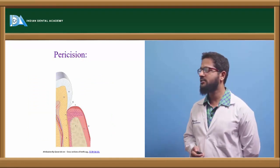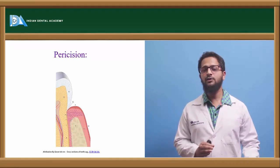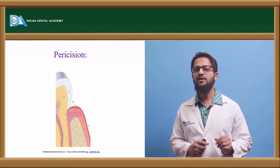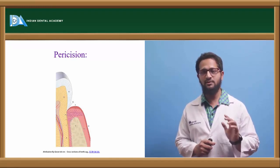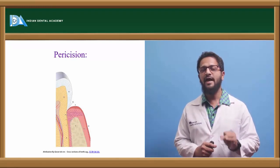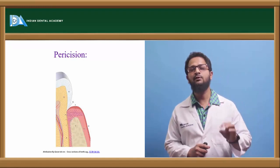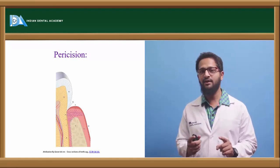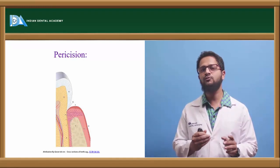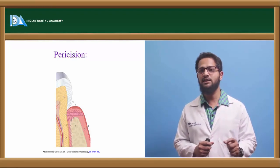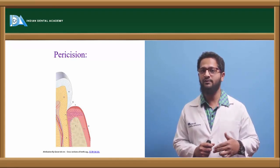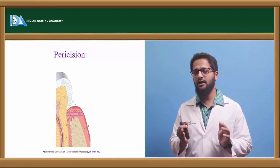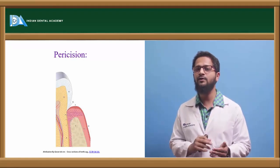Next is pericision. Immediately after orthodontic treatment, teeth tend to return back to their former positions — most commonly seen with severely rotated teeth. Teeth are supported by two types of fibers: principal fibers of the periodontal ligament, which take about 4 weeks to adapt to a new position, and supracrestal gingival fibers, which take about 40 weeks. During this period, if retention is not maintained, relapse occurs. Pericision is a minor surgical procedure wherein a surgical scalpel is introduced into the sulcus 2 mm apical to the gingival crest, and the supracrestal gingival fibers are cut to prevent the teeth from rotating back to their former position.